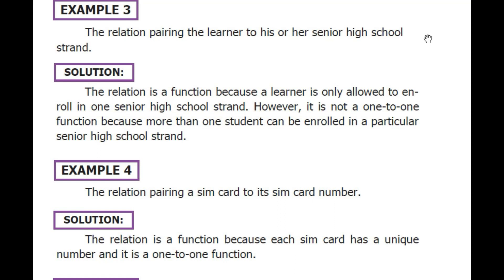Example 3: The relation pairing the learner to his or her senior high school strand — whether ABM (accountancy, business and management), TVL (technical, vocational, livelihood), GAS (general academic strand), or HUMSS. The relation is a function because a learner is only allowed to enroll in one strand. However, it is not a one-to-one function because more than one learner can be enrolled in the same strand.